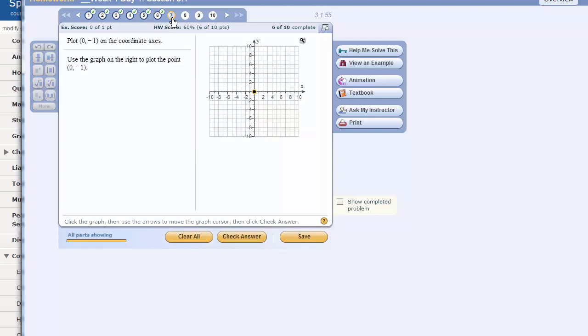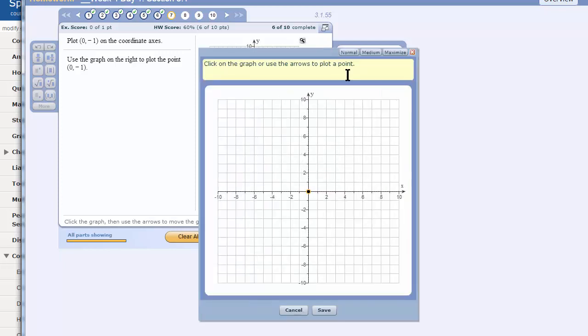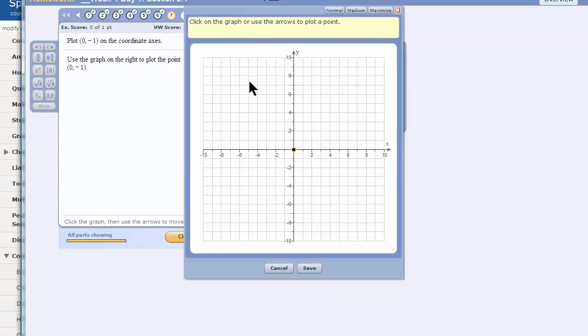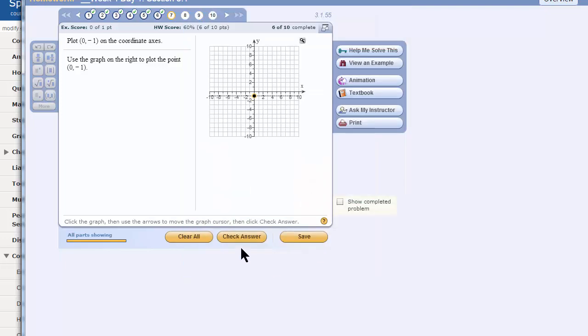I would like to find this. (0,-1). The point (0,-1) means that I go 0 in the x-direction. And 1, negative 1. In other words, 1 down in the y-direction. That is the point (0,-1). Let's save it and check it. Yes!